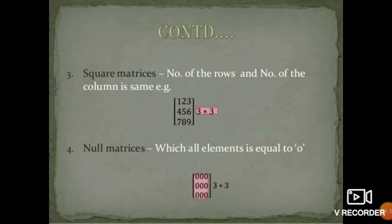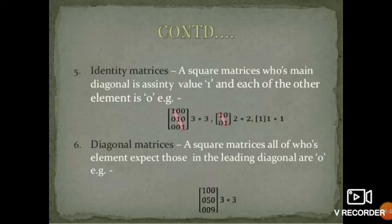Null matrices, or zero matrices: all elements are equal to zero. For example, the order of the matrix is 3 by 3. All elements of this matrix are zero. This matrix is called a zero matrix.